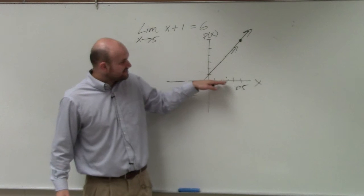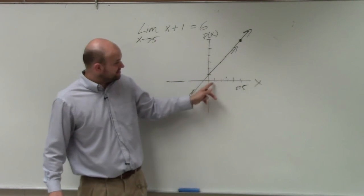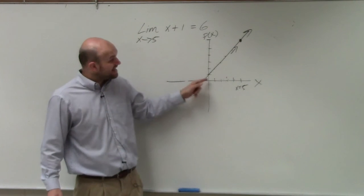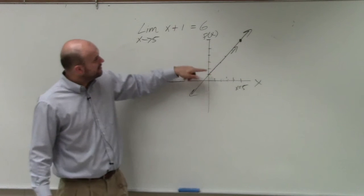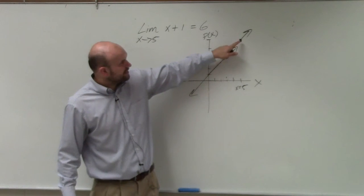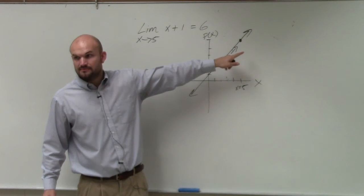You start at 1, 2, 3. As we're getting closer to 5, this f of x value is approaching the number 6. Does everybody see that?